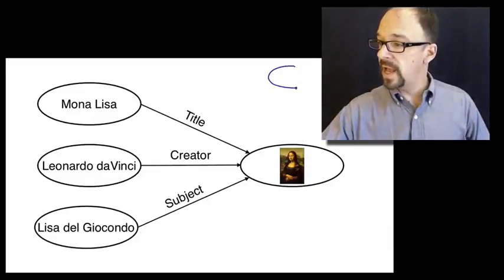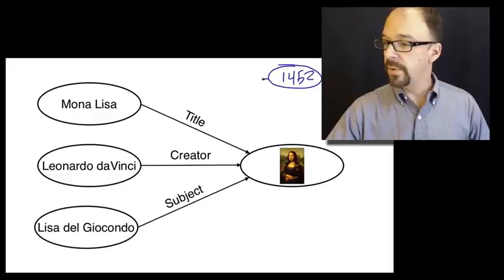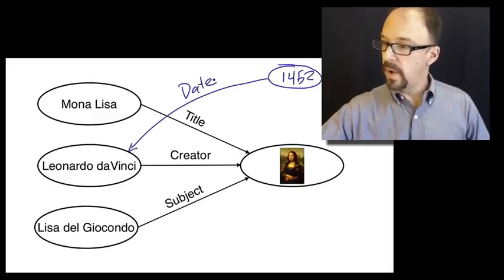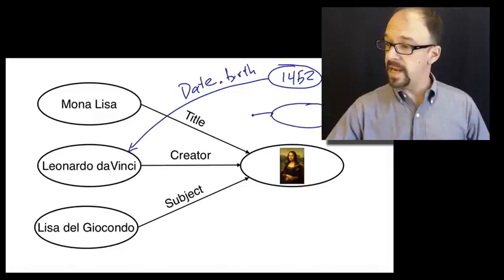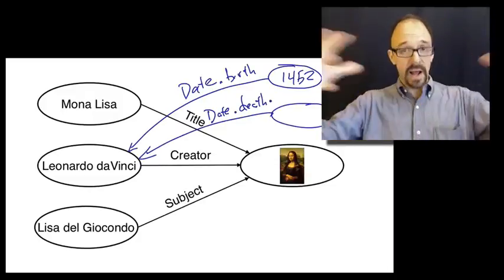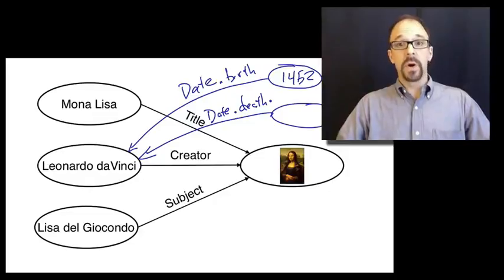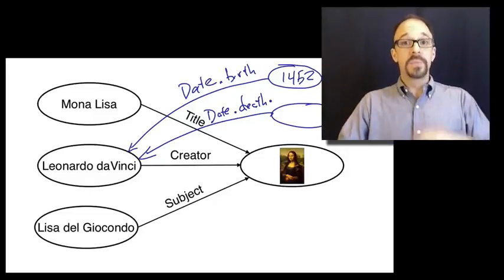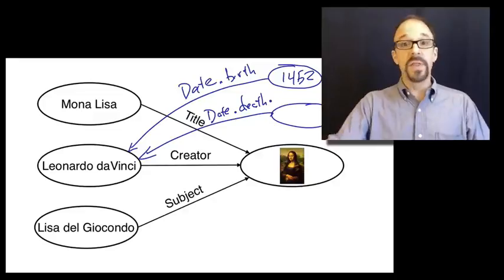So, for example, you could say Leonardo da Vinci was born in 1452. I just looked this up. So you have a date, for example, a date of birth. And then you could have another date, which is, you know, date of death. And I think you can see easily that you can create very large, very complex networks of triples between objects and subjects. And the subject can be the object of one triple and the subject of another. Leonardo da Vinci is both the subject and the object of different triples in this figure.